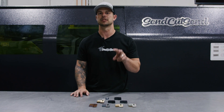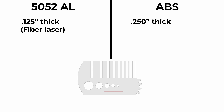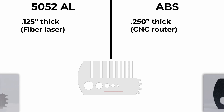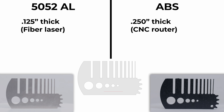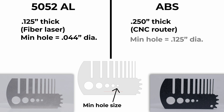Let's look at two examples and compare them. The two materials we're going to compare are 5052 aluminum at an eighth-inch thick cut on the fiber laser, and ABS at a quarter-inch thick cut on the CNC router. If we go to the material guidelines on the website and look at 5052 aluminum, we'll see a minimum hole size of 0.044 inches in diameter, while the ABS shows a minimum hole size of an eighth of an inch in diameter — a large difference that should be considered.